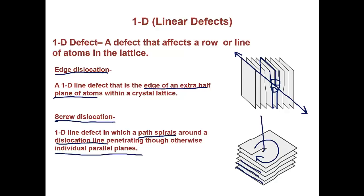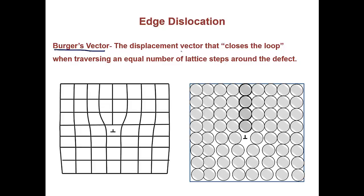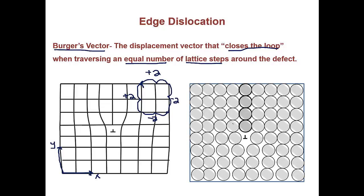On the next slide, we'll go over a geometric concept that helps us characterize dislocations: Burgers vector. Burgers vector is the displacement vector that closes the loop when traversing an equal number of lattice steps around the defect. First, let's define some axes — the x direction and the y direction. Taking a starting point, we take two steps in the positive x direction, two steps in the negative y direction, two steps in the negative x direction, and two steps in the positive y direction. This brings us back to where we started. But for a dislocation, this doesn't happen.